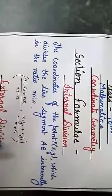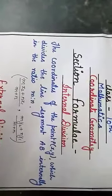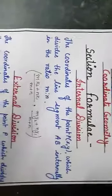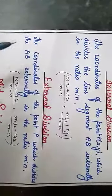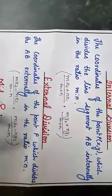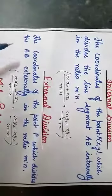Next is external division. The coordinates of point P which divides the line segment AB externally in the ratio m:n are: (mx₂ - nx₁)/(m - n) and (my₂ - ny₁)/(m - n).